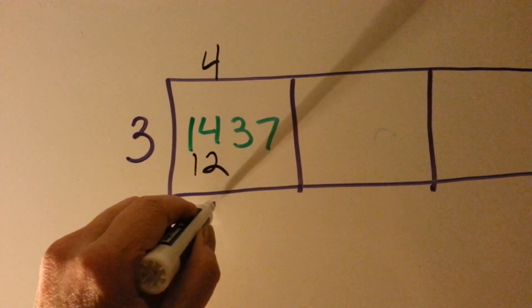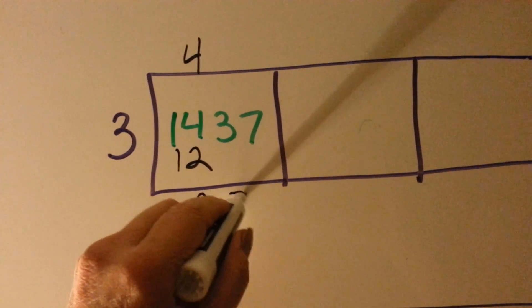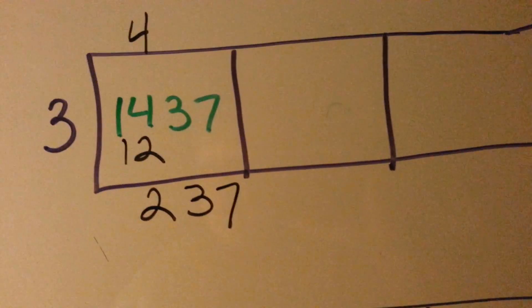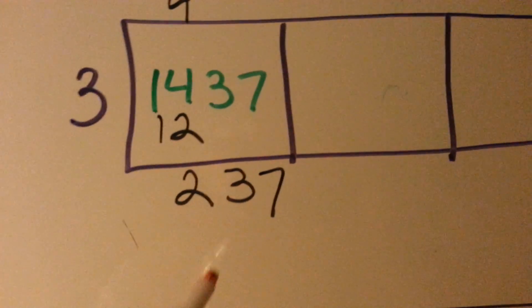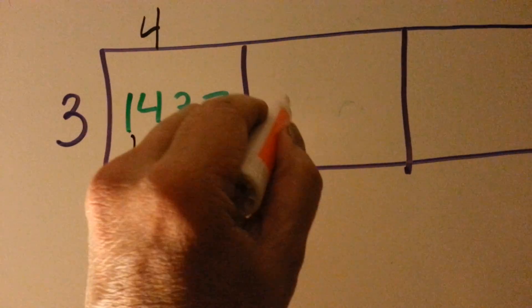4 take away 2 is 2, and we drop the 3 and the 7. Well, now what's going to happen is we're going to put this 237 into this box.